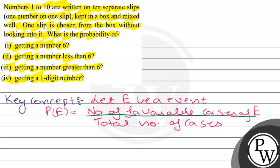Now let us apply this concept to the question. Here we have the numbers 1 to 10, written on 10 different slips. So 1 can come, 2 can come, 3 can come, 4 can come, 5, 6, 7, 8, 9, or 10.